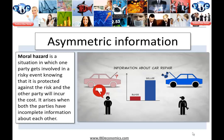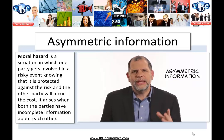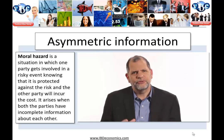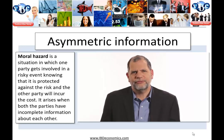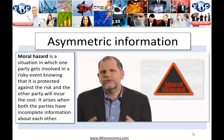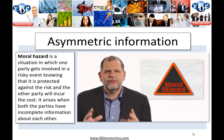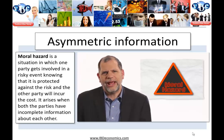This is another example of asymmetric information, where one party has more or better information than the other. When one party has an information advantage, they may have an incentive to exploit the other party — that temptation to exploit is called moral hazard. The car repair problem is just one example. A taxi driver has more information about the roads than a tourist and may take a longer route for a higher fare.